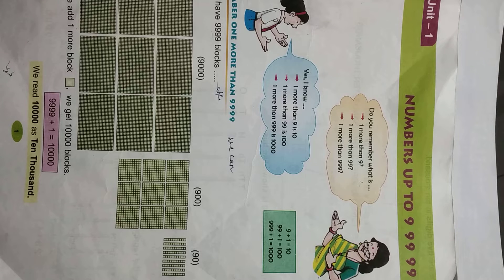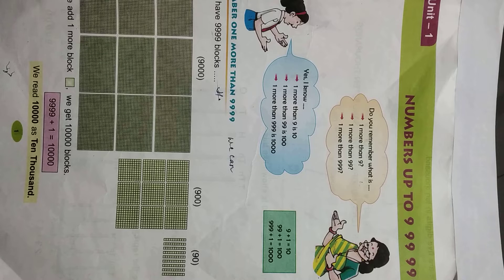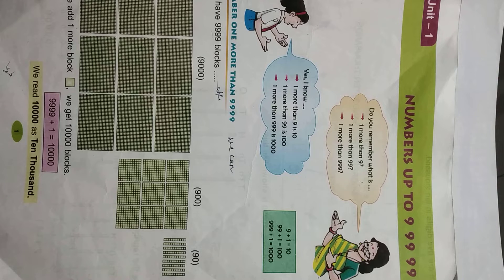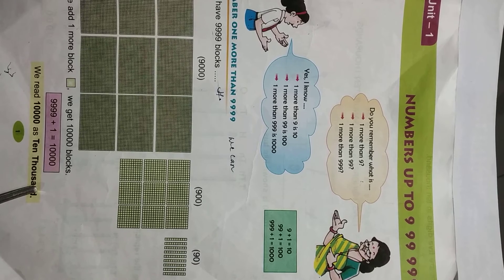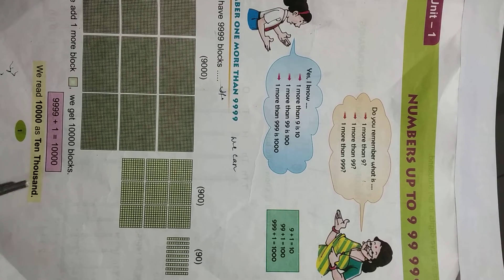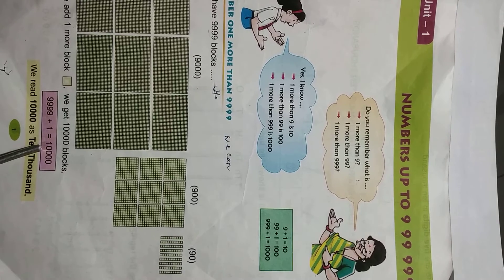In the first row, 9,000 blocks are given. In the second row, 900 blocks are given. In the third row, 90 blocks are given. And in the fourth row, 9 blocks are given. When we add 1 more block, we get 10,000 blocks. We are adding 1 to 9,999 and we get 10,000. We read the numeral as 10,000.